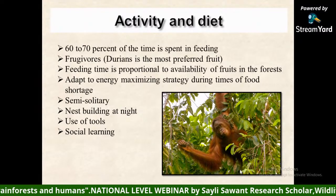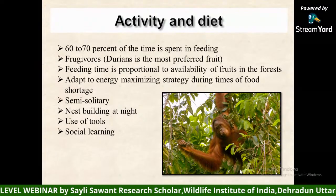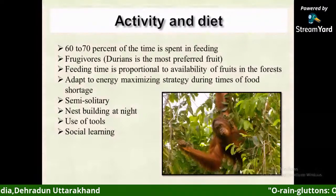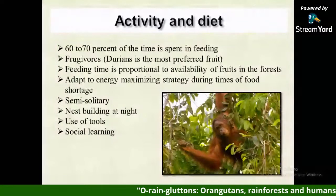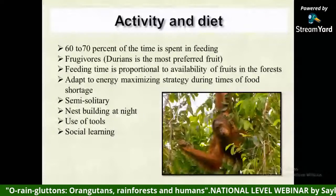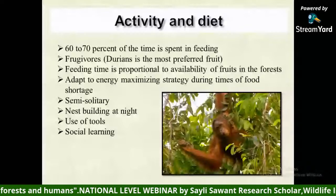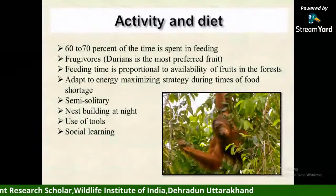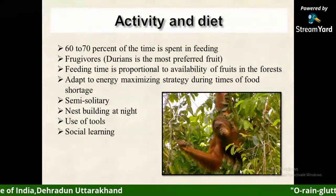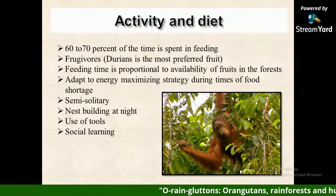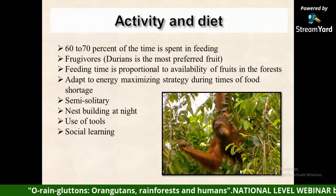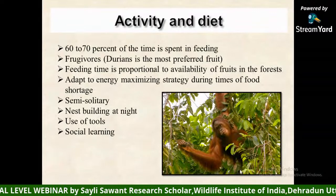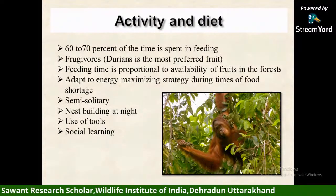Orangutans spend 60 to 70 percent of their time feeding. They are mostly frugivores; durian is the most preferred fruit. Feeding time is proportional to fruit availability in the forest — when fruits are plentiful they feed more, when scarce they rest more and supplement with leaves and bark. They adapt to an energy-maximizing strategy during food shortage.